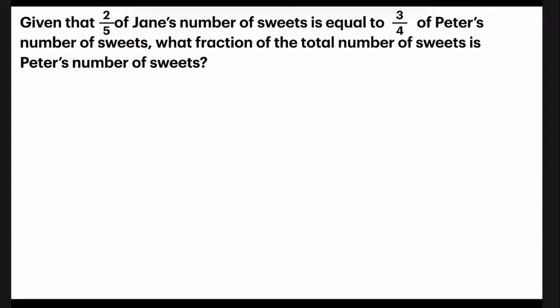So given that two-fifths of Jane's number of sweets is equal to three-quarters of Peter's number of sweets, I'm going to use that part of the sentence and draw a model to show you what it means. So here we go.